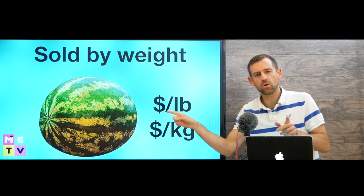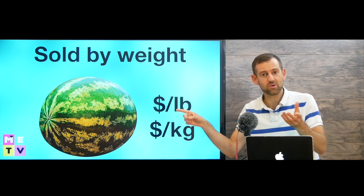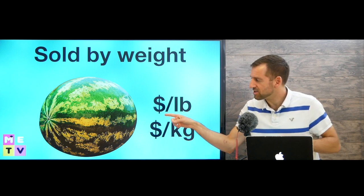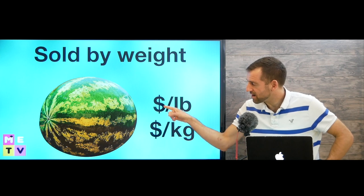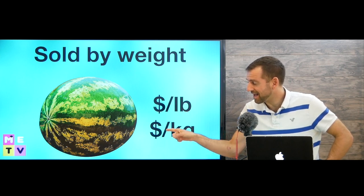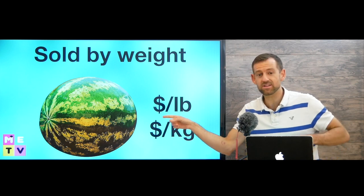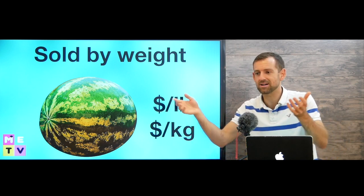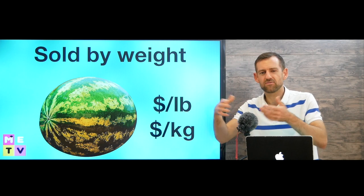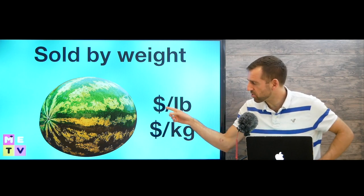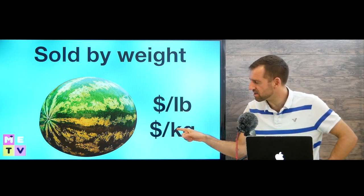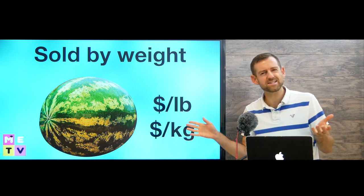Now, if you go into a grocery store here in Canada, you will see the price per pound and the price per kilogram for everything. Watermelons, meat, fruits, vegetables, everything. The price per pound and the price per kilogram. Now, why is that?